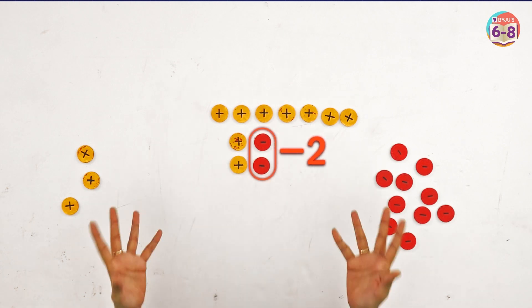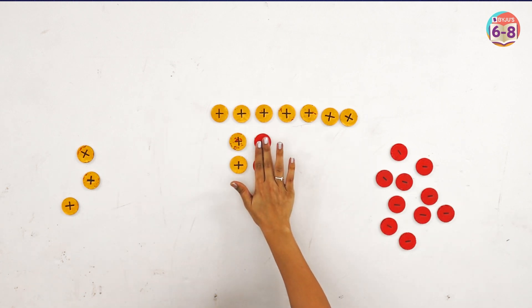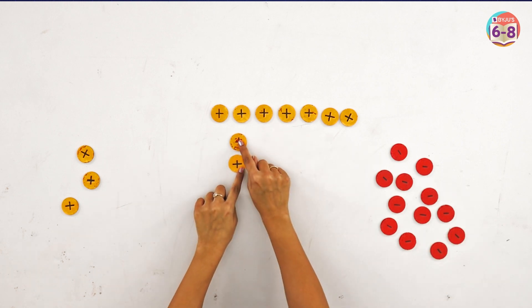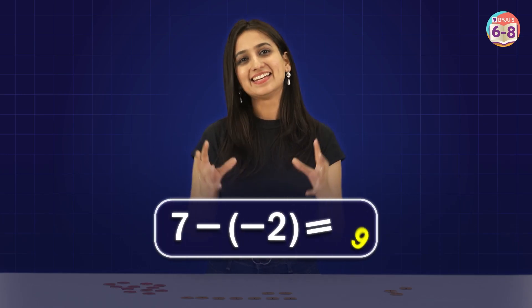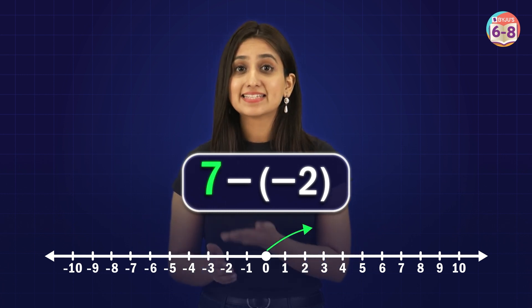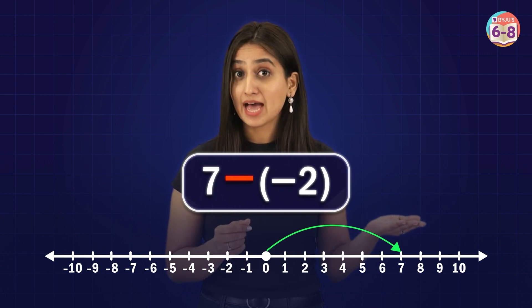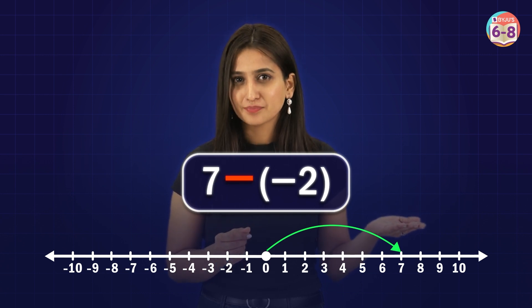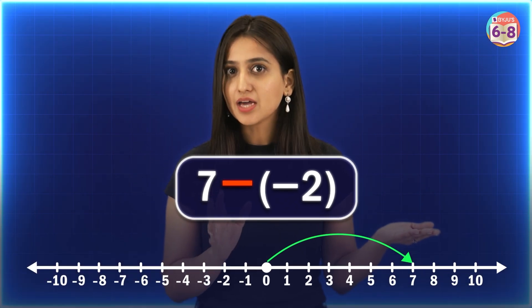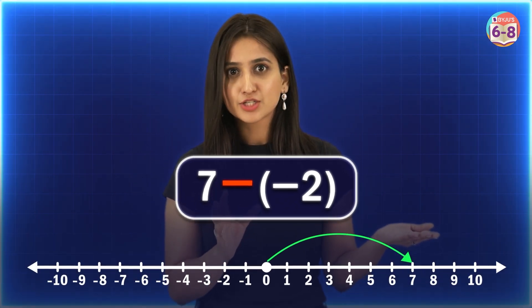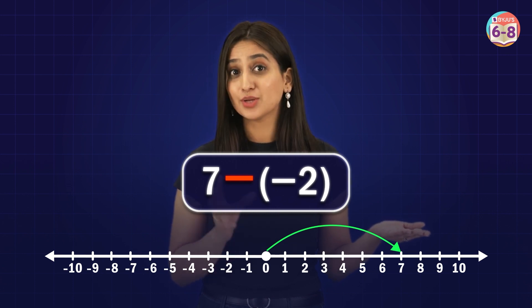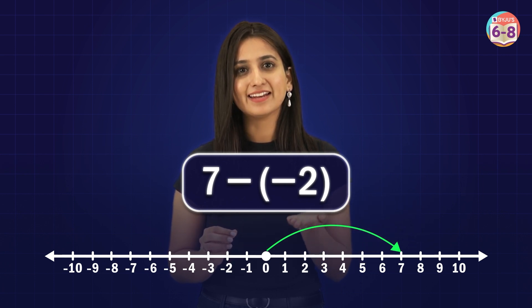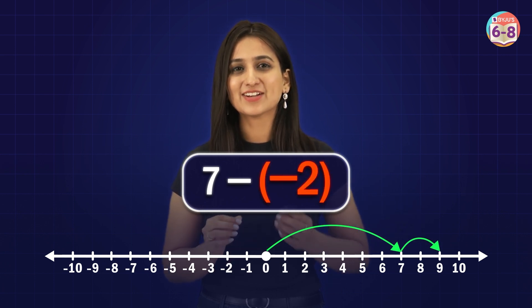After adding those pairs, the value seven doesn't change, but now we have two negative chips we can remove. Removing the two negative chips, we are left with nine positive chips, so the answer is nine. On the number line, seven steps to the right — but since we're subtracting a negative number, we reverse direction again and move to the right — two more steps to the right of seven, and we land on number nine.